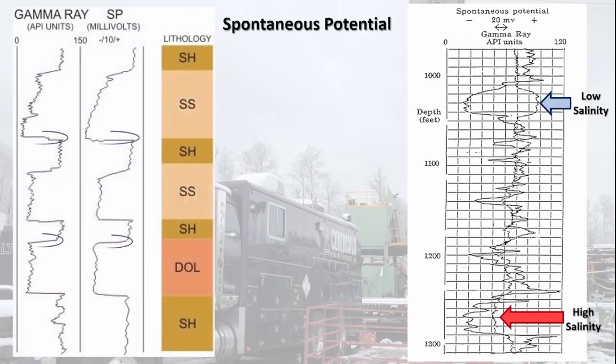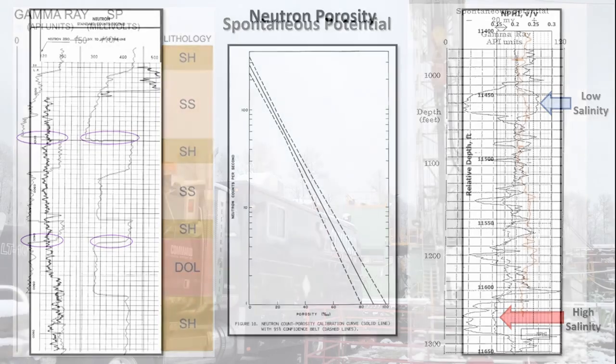Like gamma ray logs, the contact points between stratigraphic units are identified by the curved inflection points on the log. Measurements are dependent on the salinity difference between the drilling fluid and formation fluid, and this difference can lead to misinterpretation if not calibrated correctly.